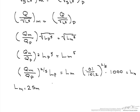So our length scale, which is L_m divided by L_p, is 25 over 1000, which equals 1/40.